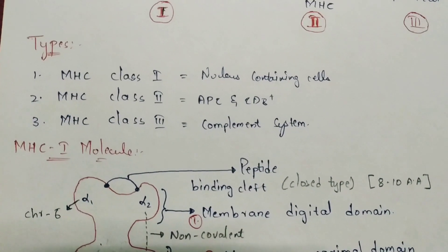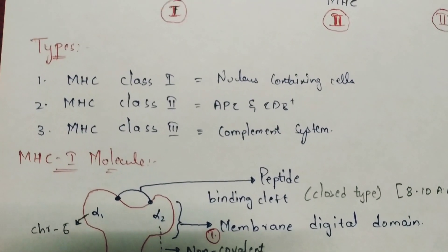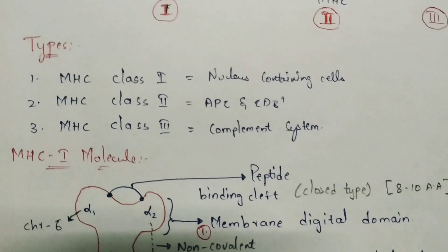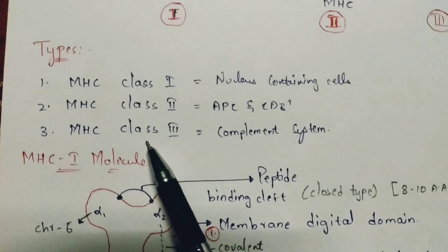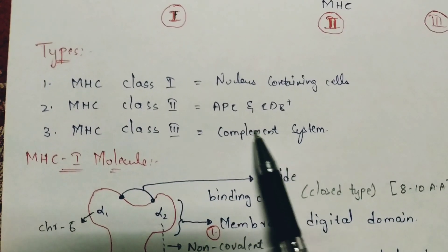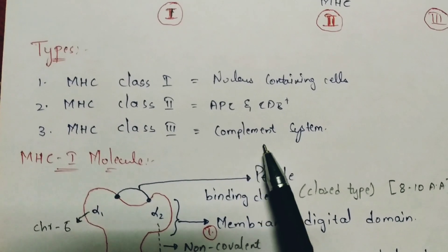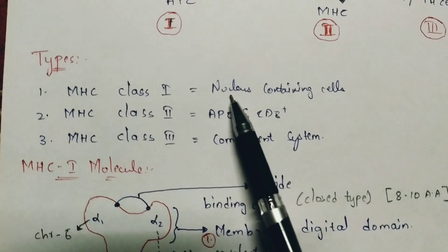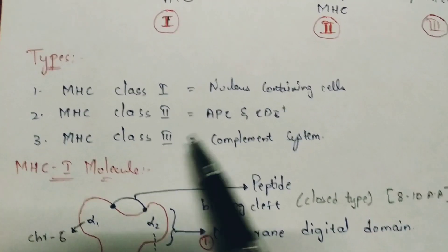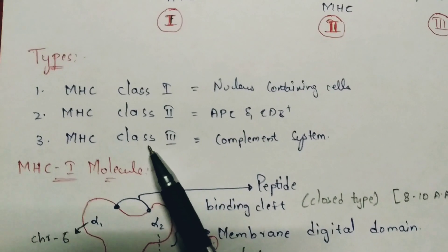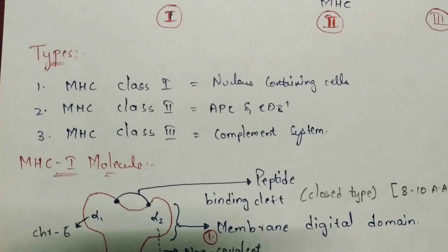MHC molecules are of three types: MHC class 1, MHC class 2, and MHC class 3. In this video, I will explain class 1 and class 2 only. MHC class 3 relates to the complement system, which will be covered in a separate video, as it requires understanding complement system first.